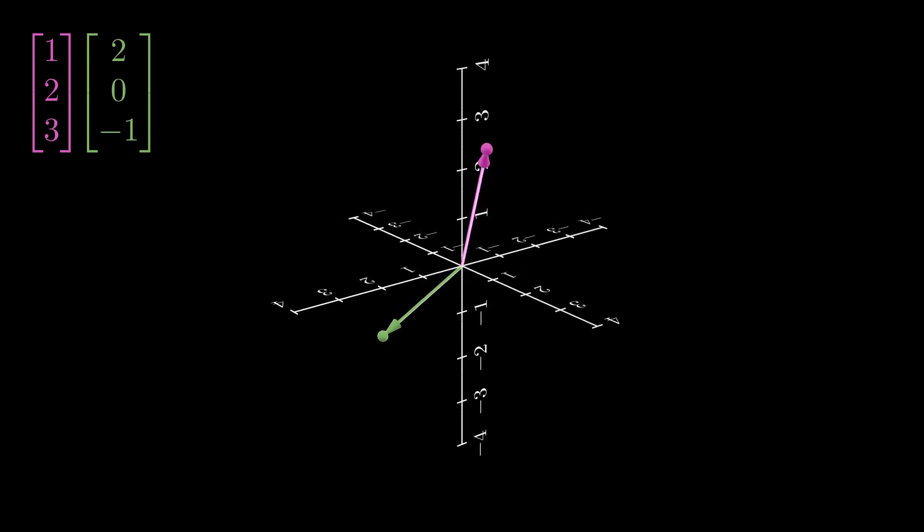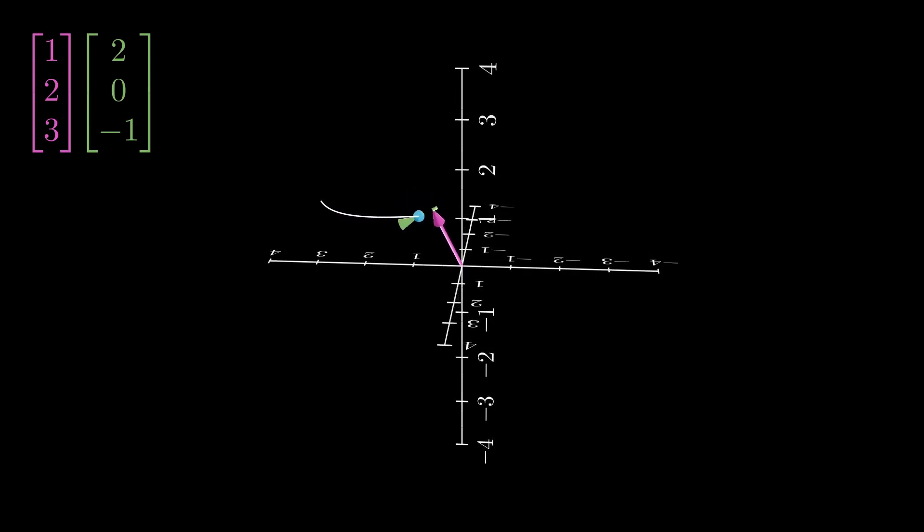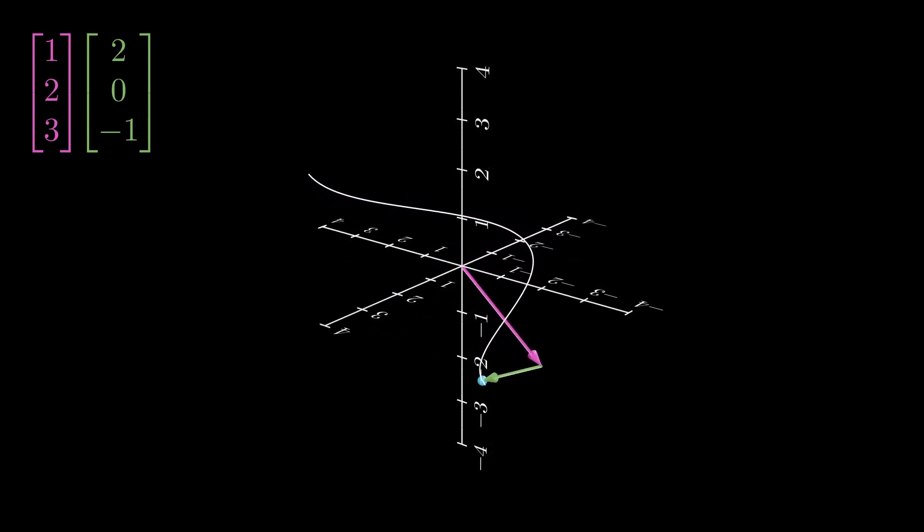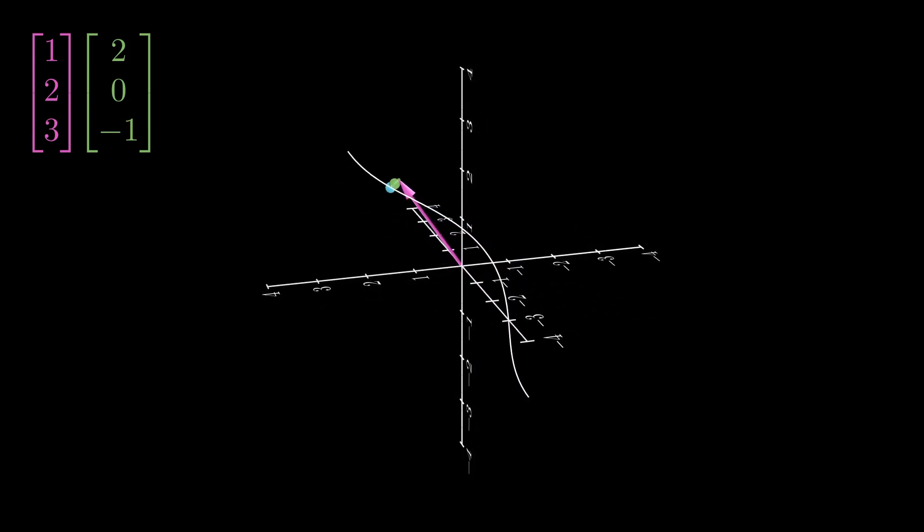We can visualize adding two arrows by drawing the base of one at the tip of another. Then, it becomes abundantly clear what a linear combination of two arrows looks like. It's the point at the very top of the scaled green arrow here.